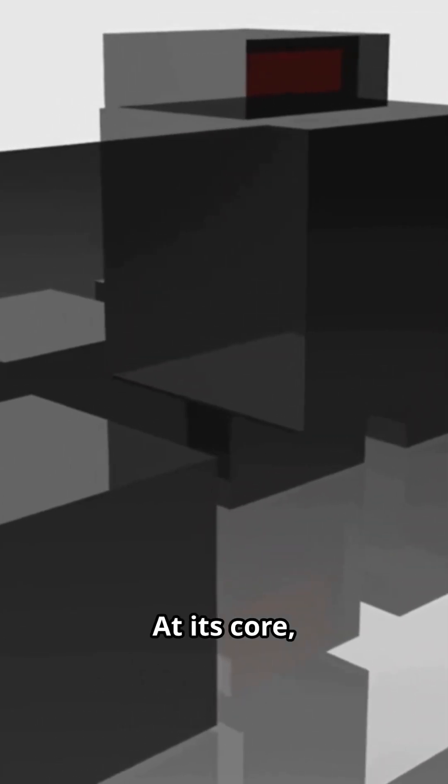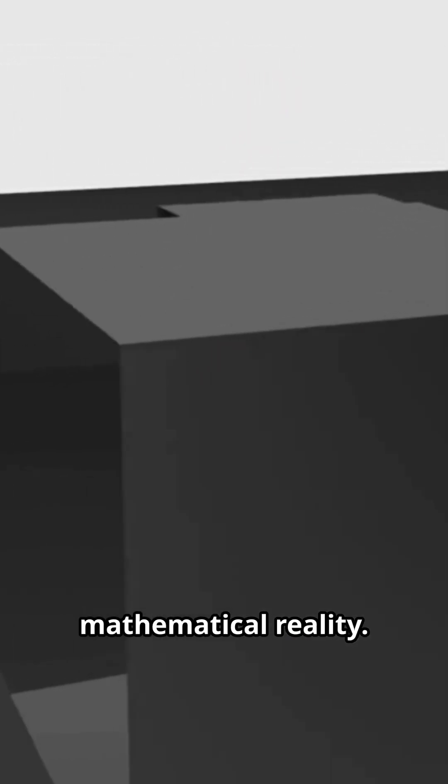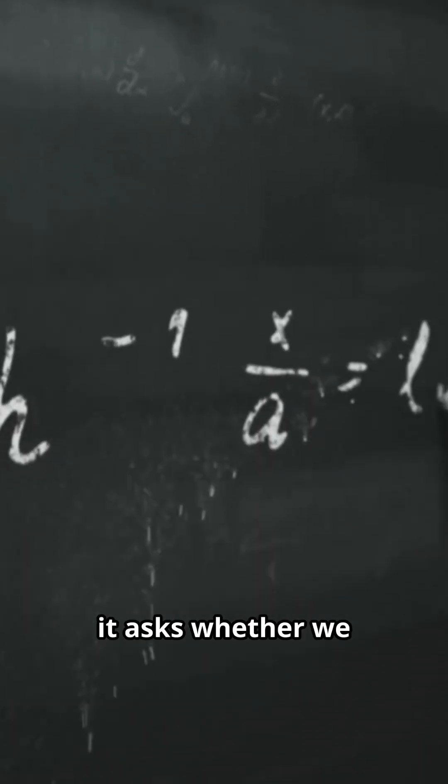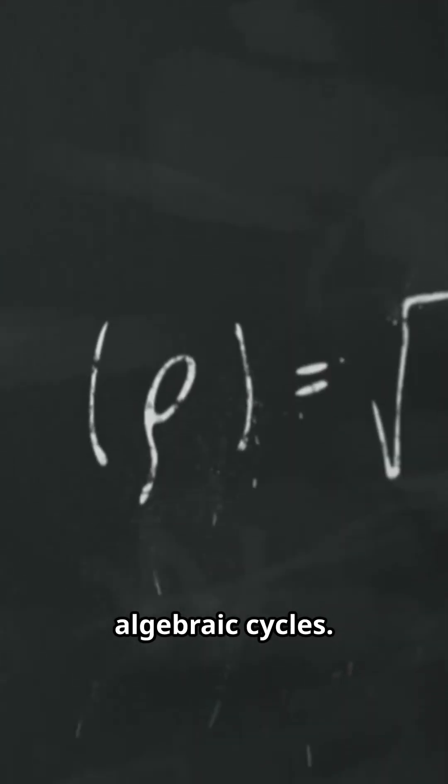But what exactly is the Hodge conjecture? At its core, it's asking a fundamental question about the building blocks of mathematical reality. Specifically, it asks whether we can describe the topological features of algebraic varieties using something called algebraic cycles.